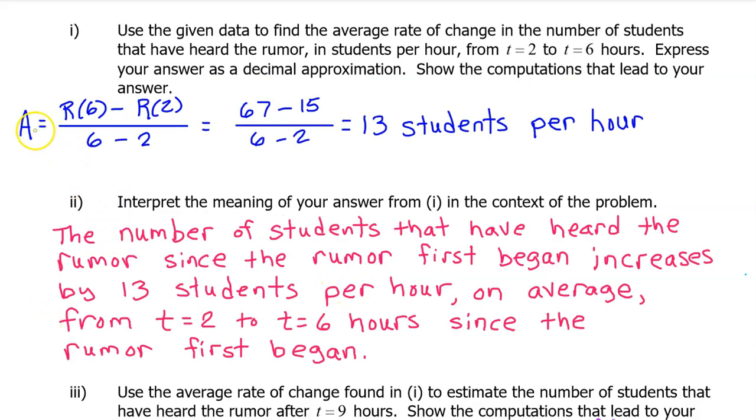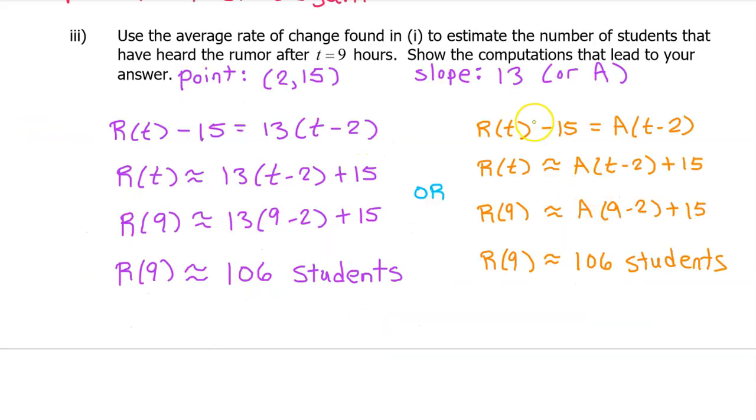By the way, since we defined the letter A as being equal to the average rate of change, if it turns out to be a long decimal, we can use the letter A in our calculations instead of that decimal. As long as you defined the letter A as being equal to the average rate of change in part 1, you can write the letter A everywhere the average rate of change appears.